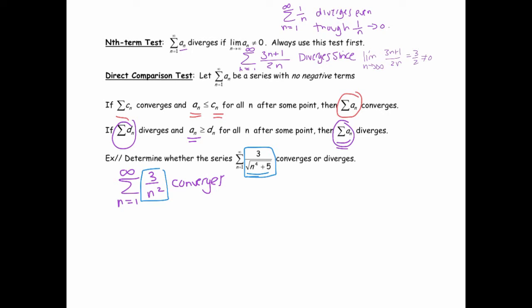So the way the reasoning works is you would say 3 over the square root of n to the 4th plus 5. Well, that is less than or equal to 3 over the square root of n to the 4th. Right? If you make the denominator smaller, you make the number bigger. And this is going to be true for all n bigger than or equal to 1. So what does that tell us? Well, 3 over the square root of n to the 4th is also equal to 3 over n squared.